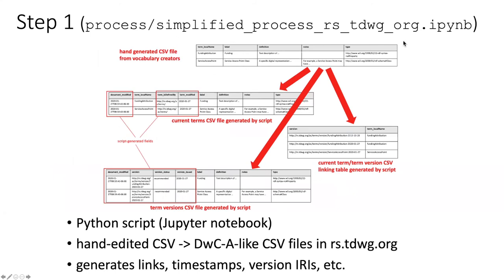The sheet that you filled out and hand-edited gets processed by a Python script in a Jupyter notebook. That hand-edited CSV gets turned into the Darwin Core archive-like CSV files that are in the rs.tdwg.org repository. The links between these different spreadsheets, timestamps, and version IRIs are all generated by the script.